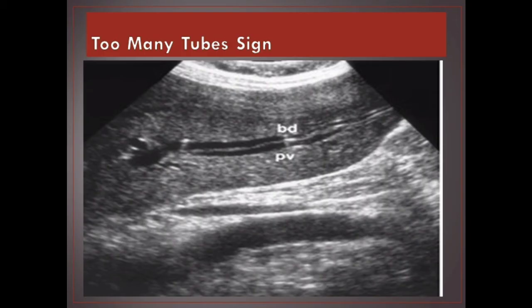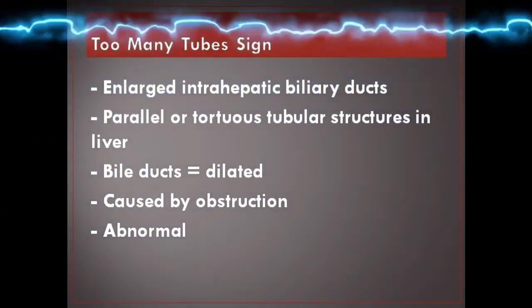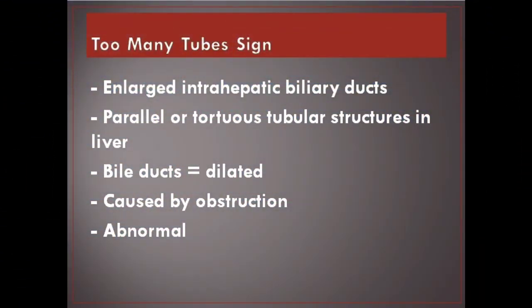Too many tubes sign. Enlarged intrahepatic biliary ducts presenting as parallel or tortuous tubular structures in the liver. Bile ducts are dilated, caused by obstruction. Abnormal.